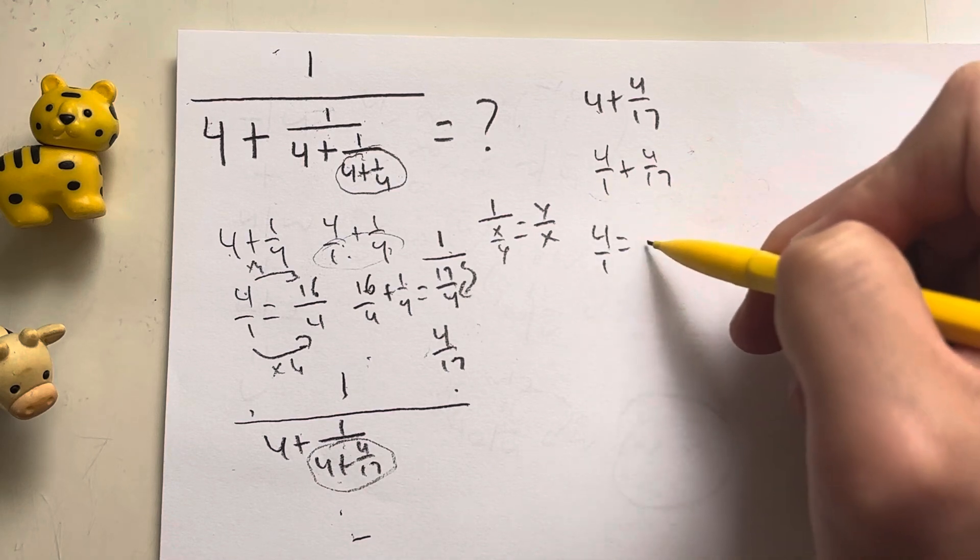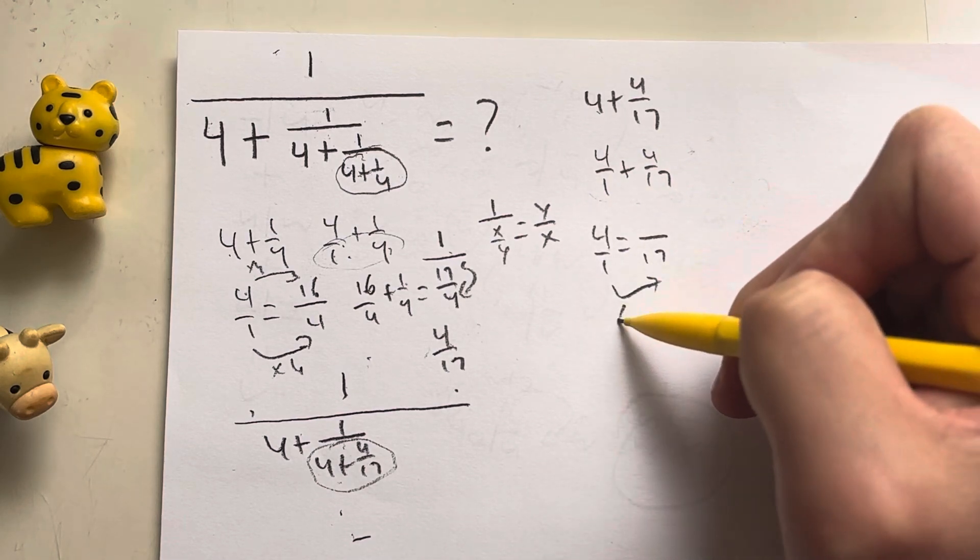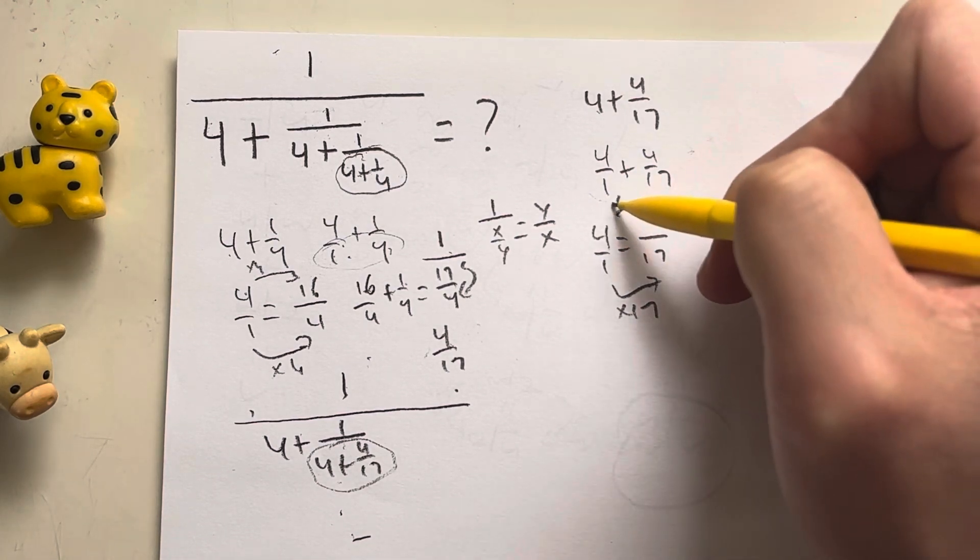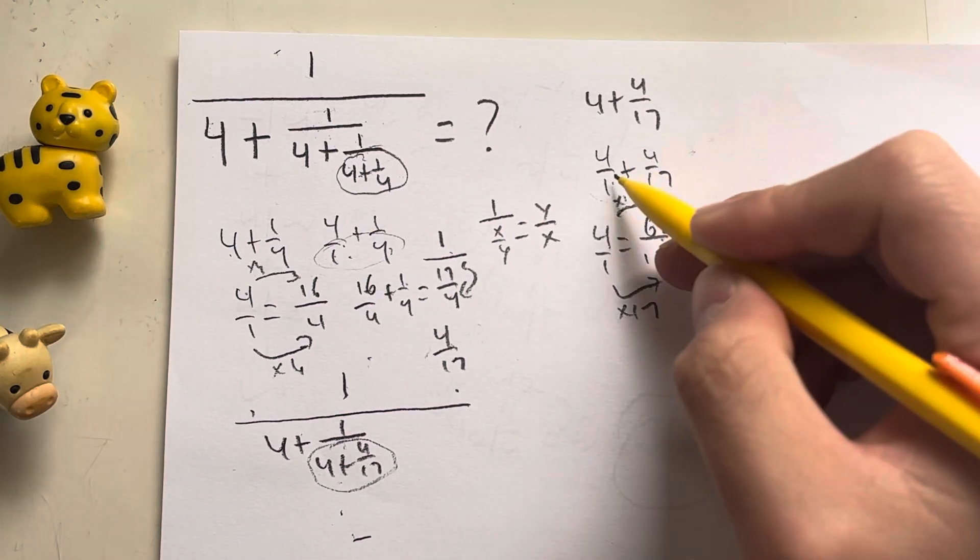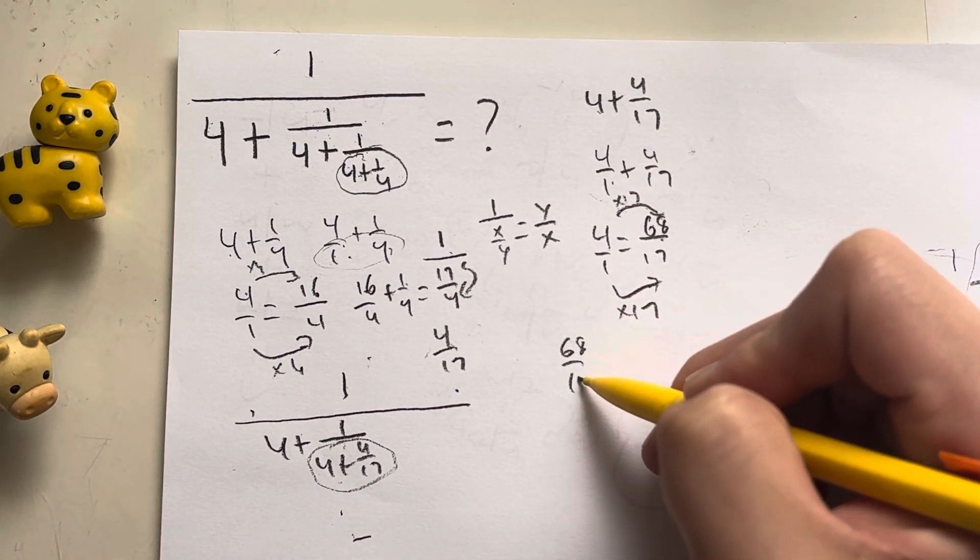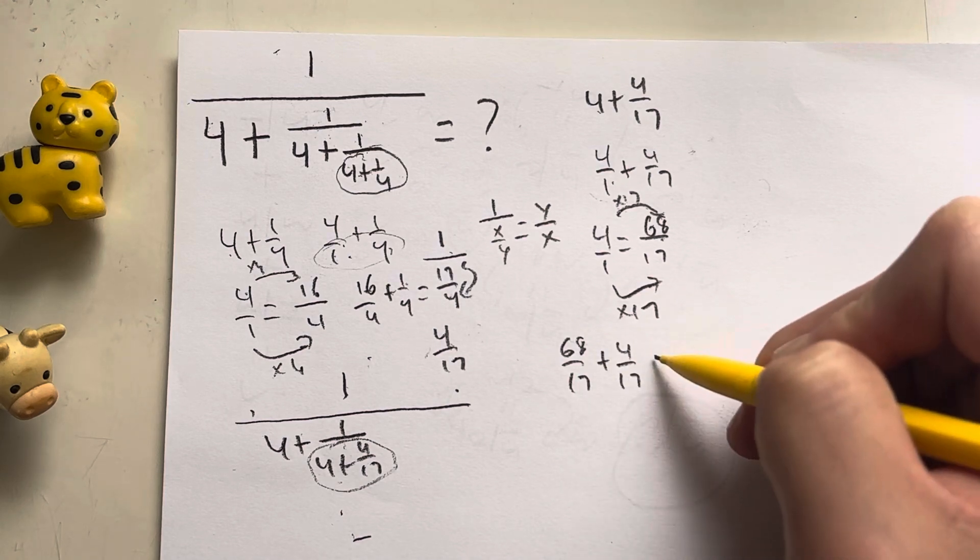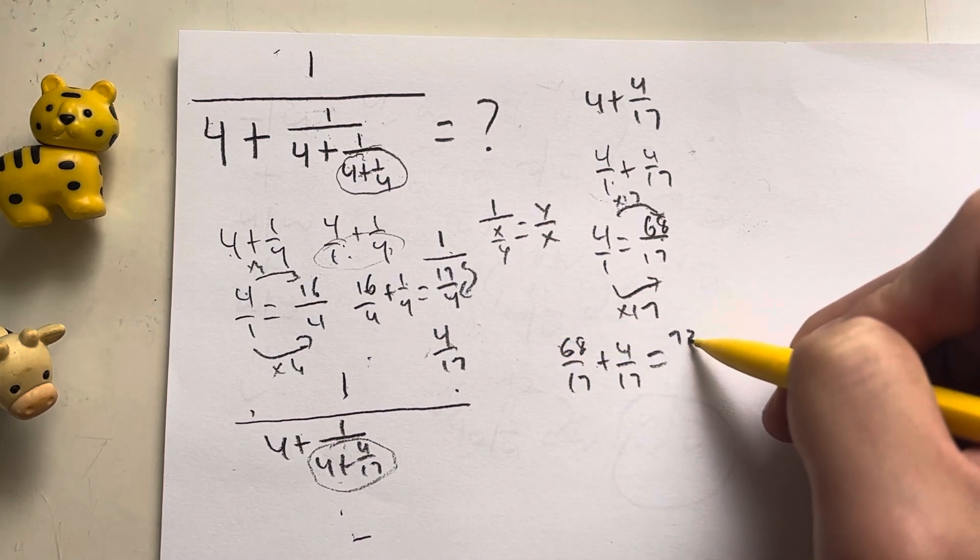So in this case, 4 over 1 is equal to what over 17? I multiply this by 17, so it means I have to multiply the 4 by 17. 4 times 17 is going to give me a total of 68. So this becomes 68 over 17 plus 4 over 17. 68 plus 4 gives me 72 over 17.